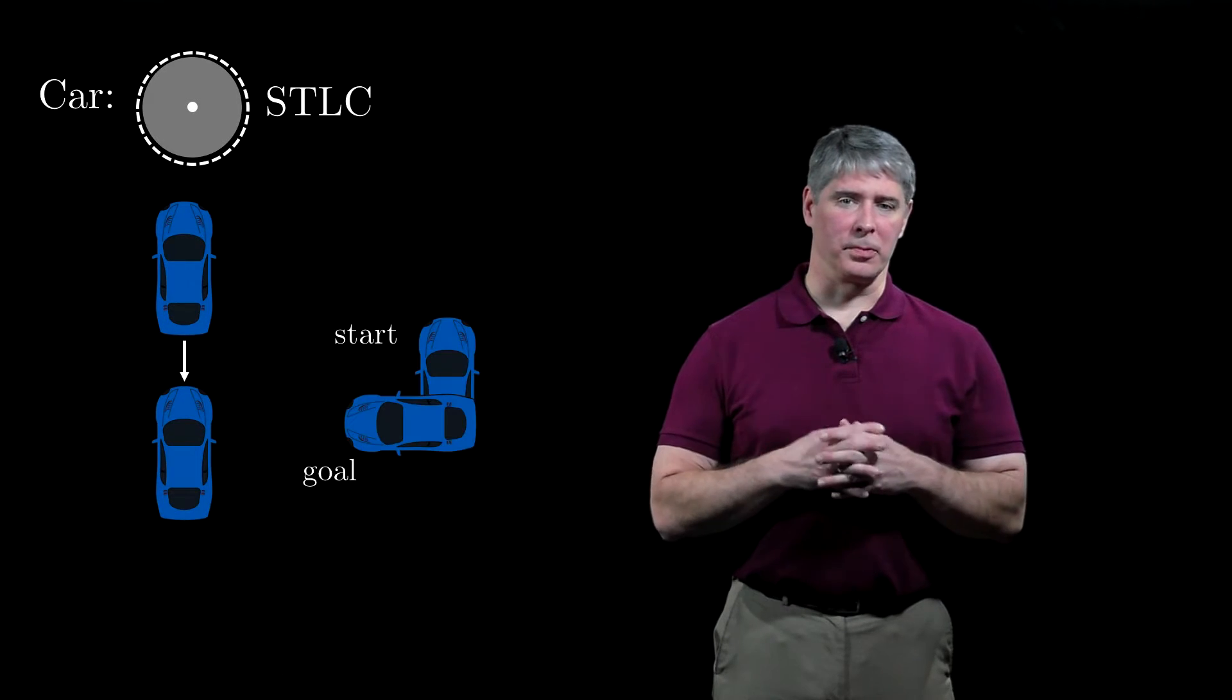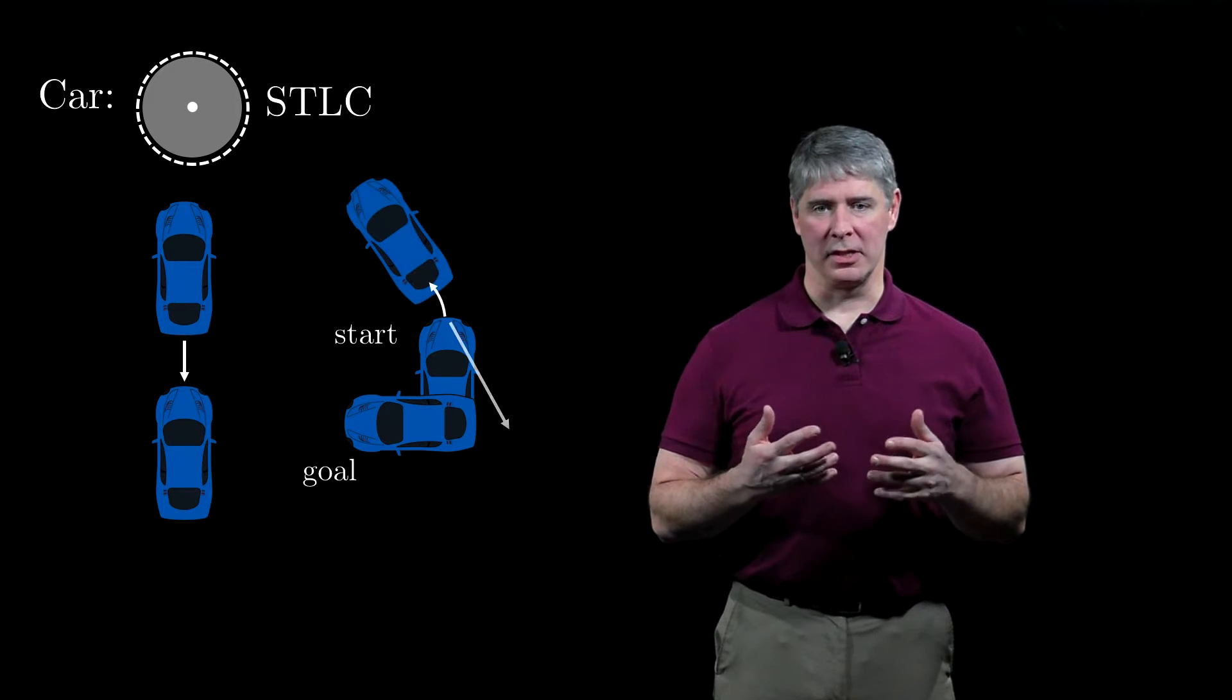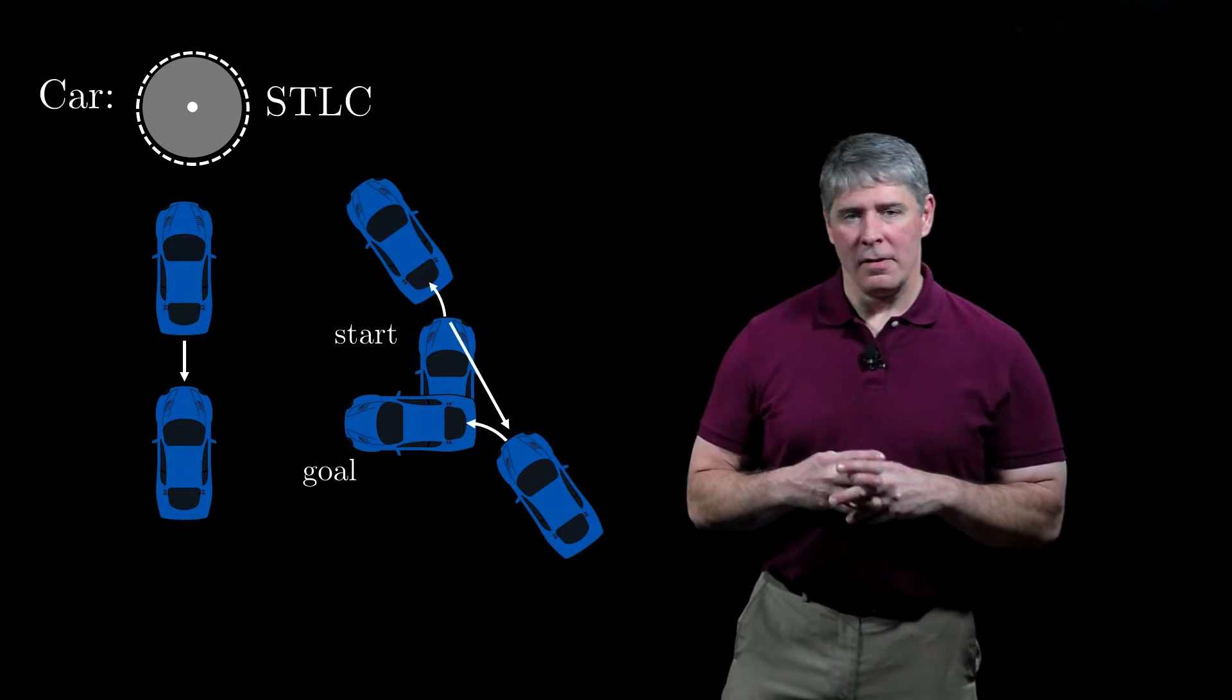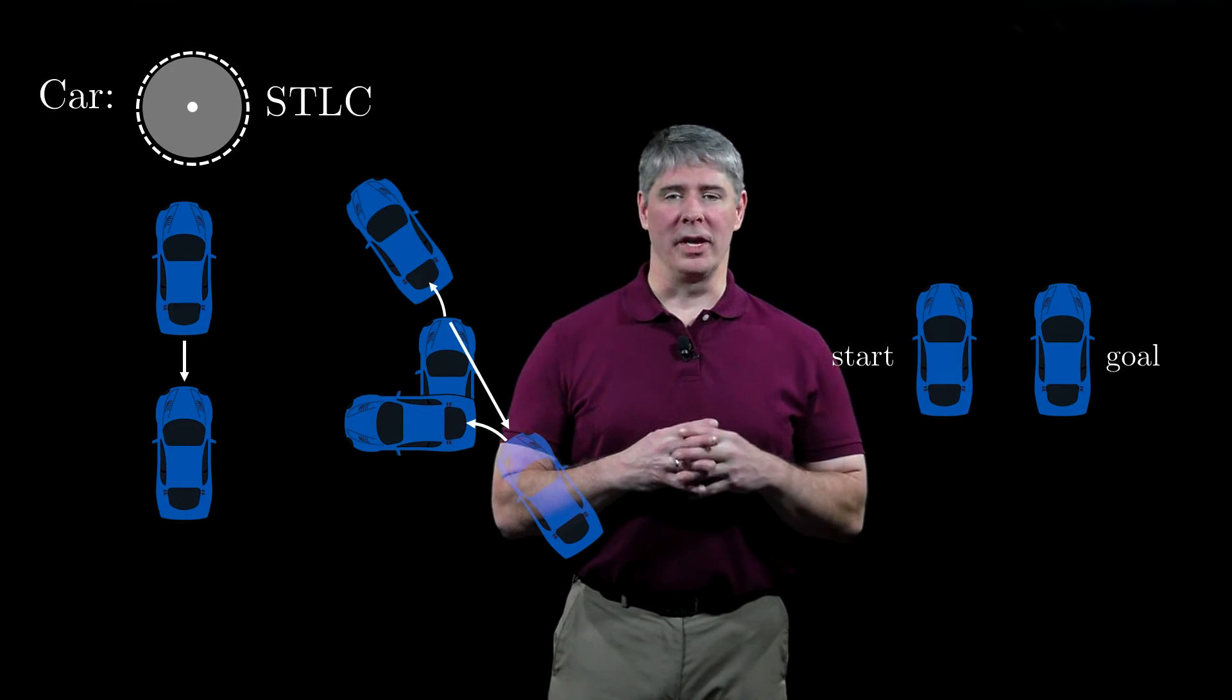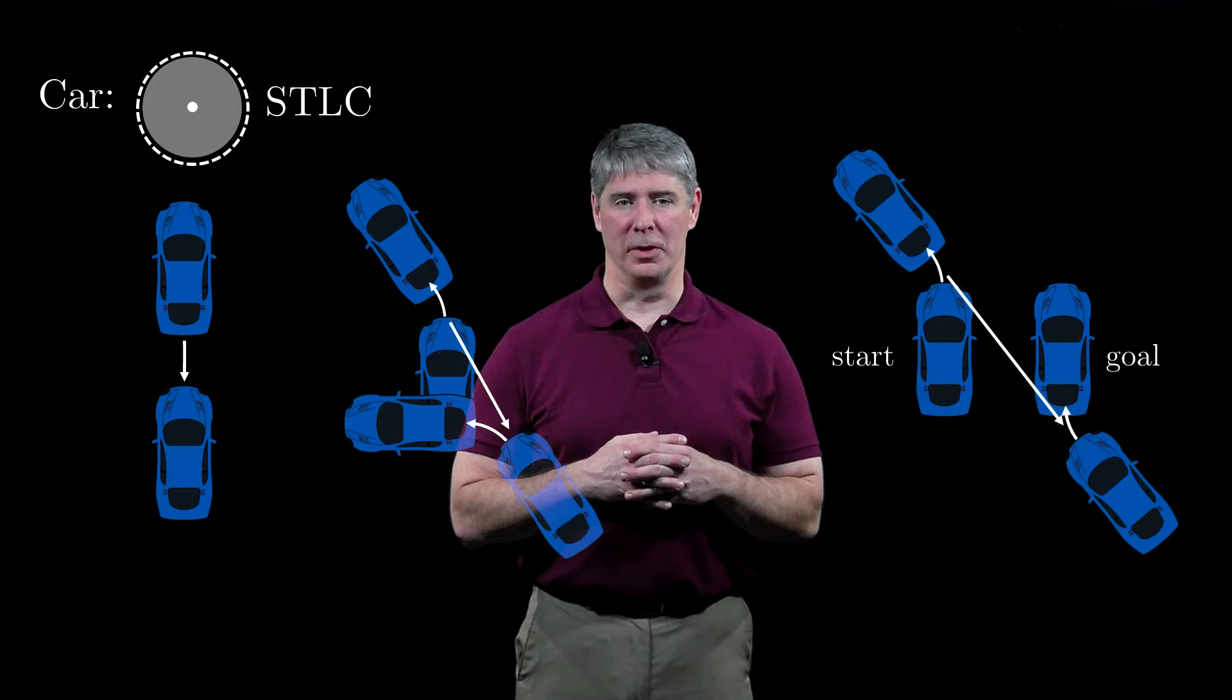If the goal is to rotate in place, a forward turn, backward translation, and forward turn does the trick. Finally, if the goal is to move sideways, again, two forward turns and a backward translation achieve the motion.